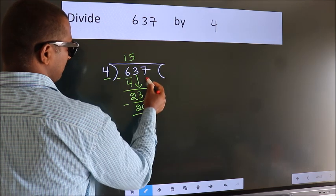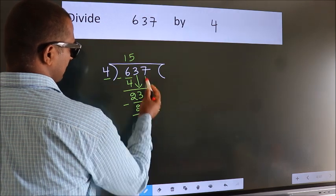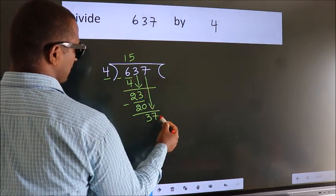After this, bring down the beside number. So 7 down. So 37.